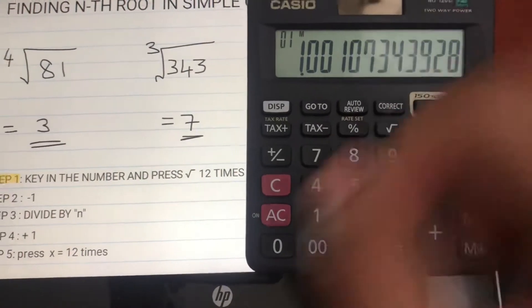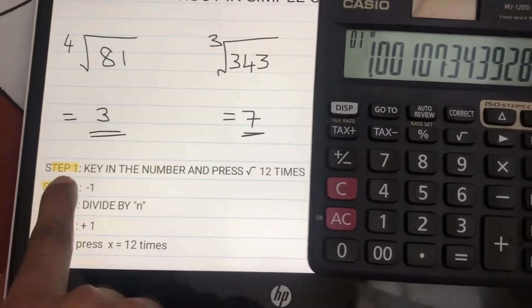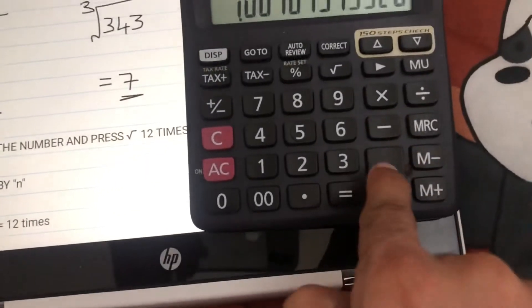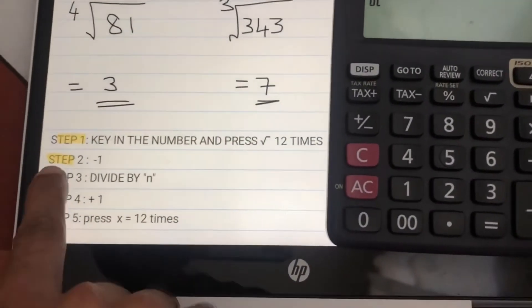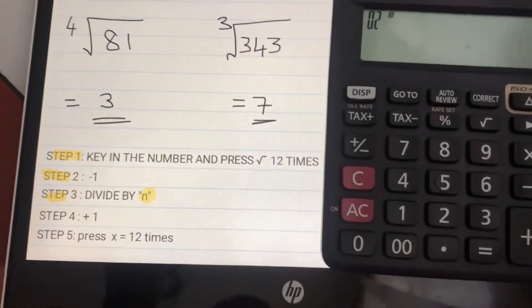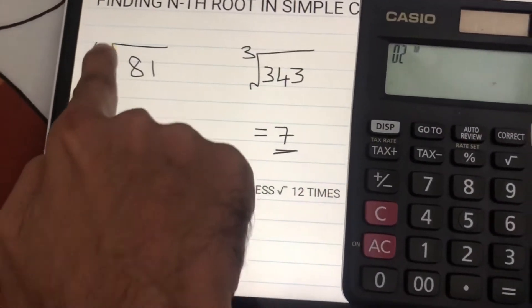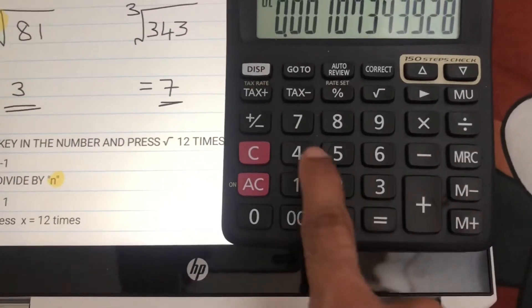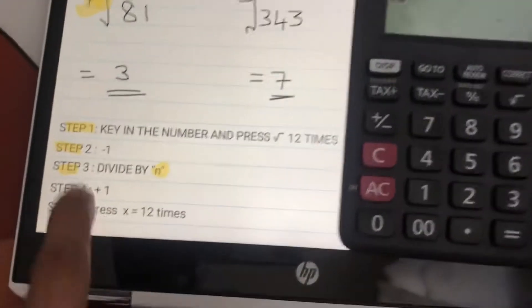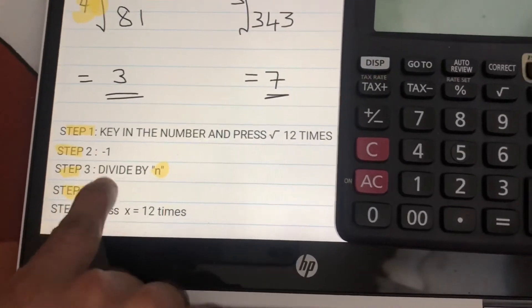What is step 2? Step 2 says minus 1, so press in the calculator minus 1. Next, step 3 says divide it by n. Now in the first question, n is 4, right? Fourth root. So I'll divide by 4. Done.